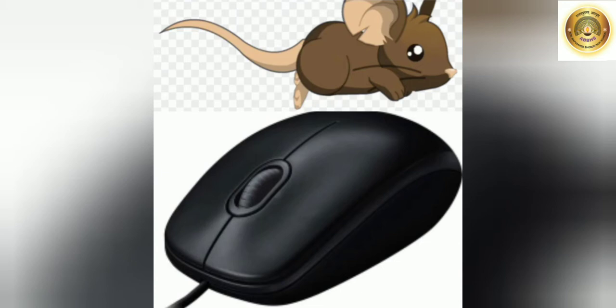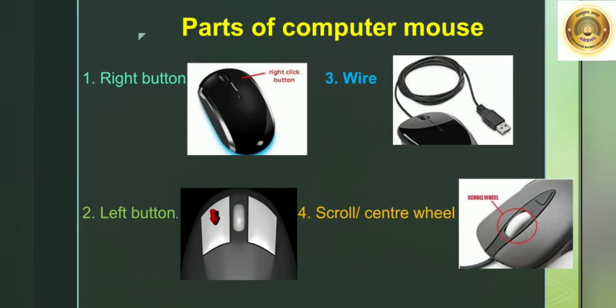The computer mouse has four parts. First is the right button, second is the left button, third is the wire, and fourth is the scroll or center wheel.